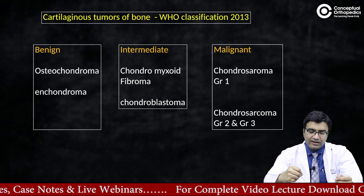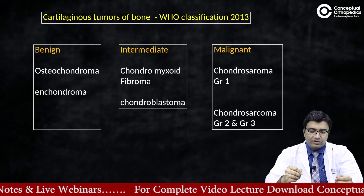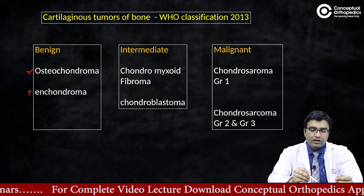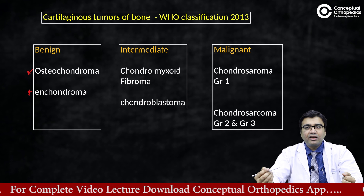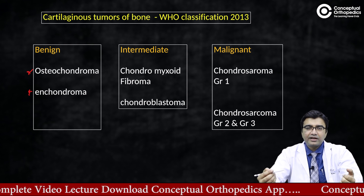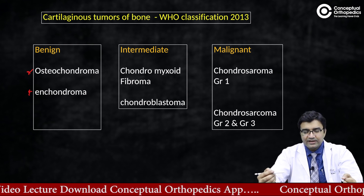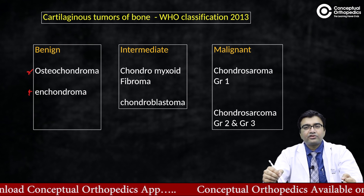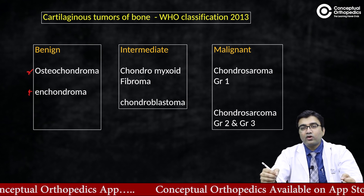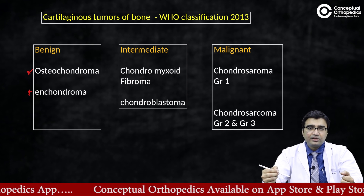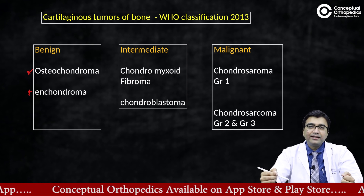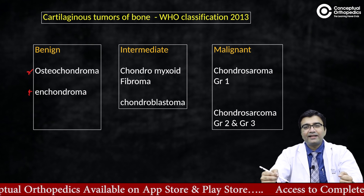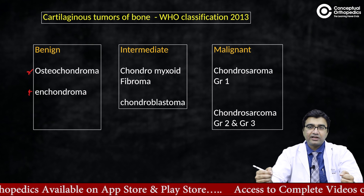In the benign category we have osteochondroma and enchondroma — many times these can be left as such if they are incidentally detected. On the other end of the spectrum are the malignant tumors, the chondrosarcomas, classified into grade 1 which is a low-grade type, and grade 2 and 3 which are intermediate and high grade.